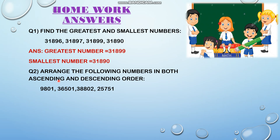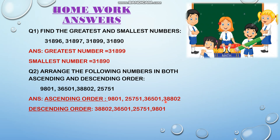Ascending order means arranging numbers from smallest to largest. So the order is: 9,801; then 25,751; then 36,501; then 38,802. Descending order is just the opposite of ascending order — you can write the reverse of ascending order to get the descending order.